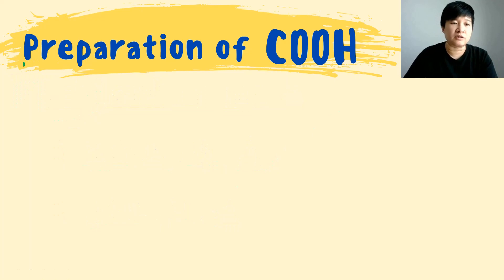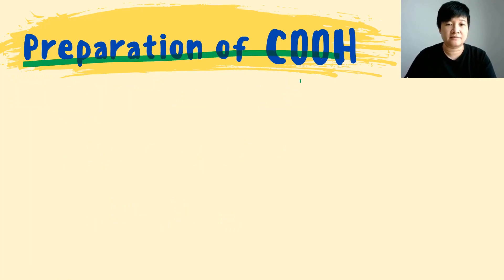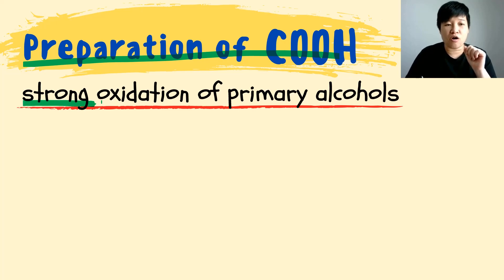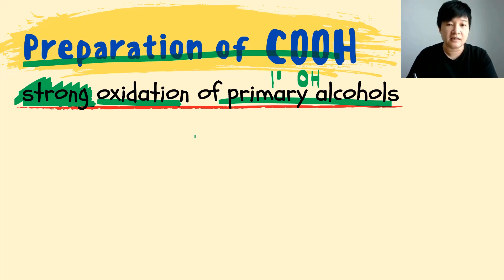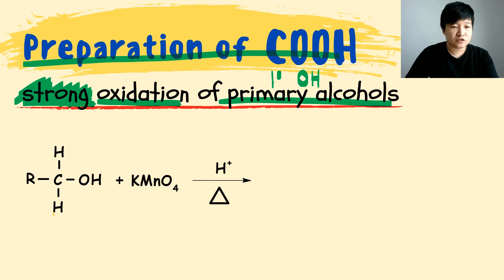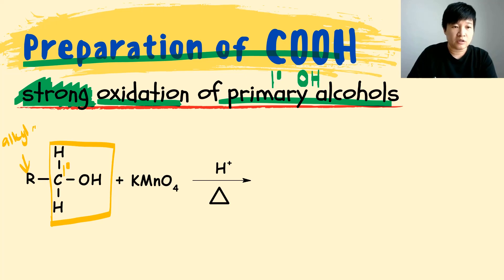Let's jump into the first preparation of carboxylic acid. The first method is the strong oxidation of primary alcohol — the condition must be strong oxidation. Looking at the structure, the carbon that is holding the OH is only holding one alkyl group. Knowing that your alkyl group is your carbon group, the carbon holding OH is only a primary carbon. Therefore, it's a primary alcohol.